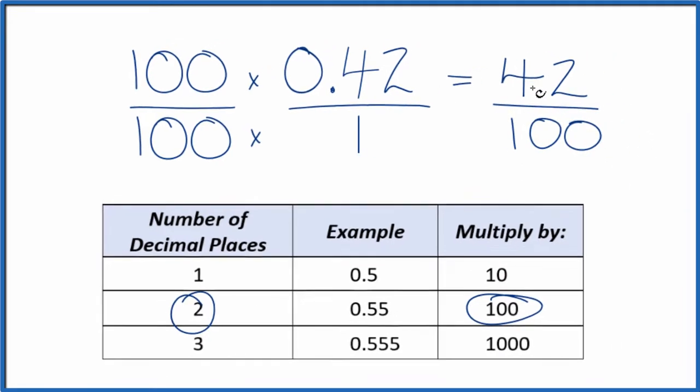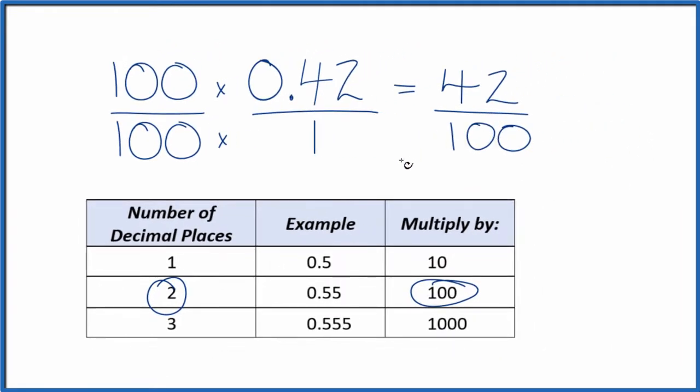Now we have our fraction, 42 over 100. We can reduce this since we have even numbers. Divide the top by 2, that gives us 21. Divide the denominator by 2, that gives us 50.